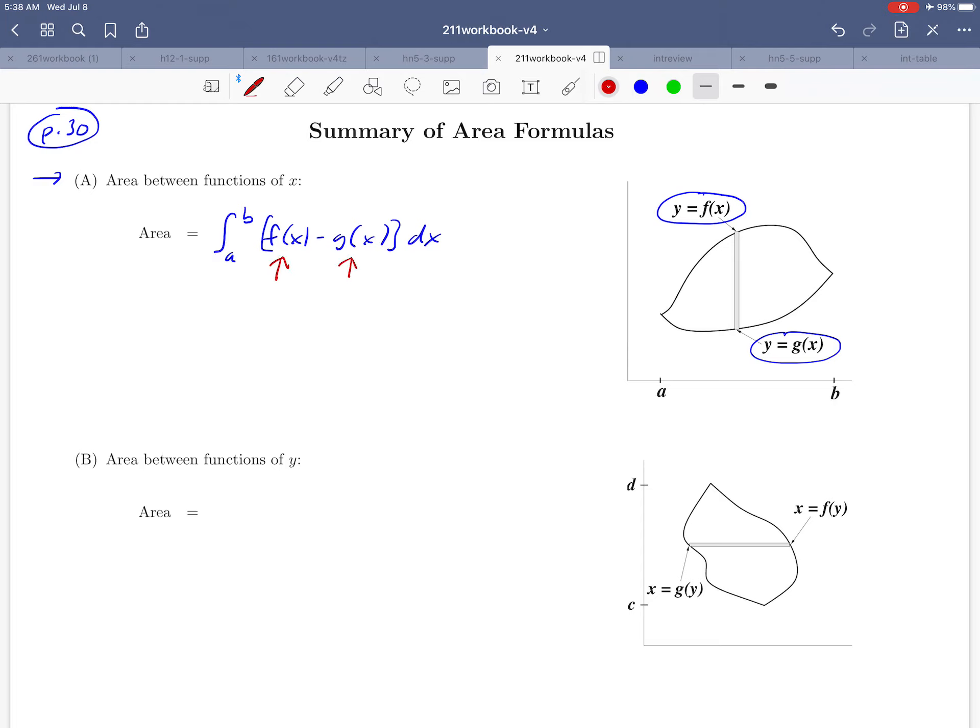And the thing to notice is that f of x is the curve that's on the top of your region and g of x is the curve on the bottom. Graphically, you can think of this as just f of x minus g of x is representing the height of this rectangle and dx is the width, and then the integration just adds those areas up to give you your total area.